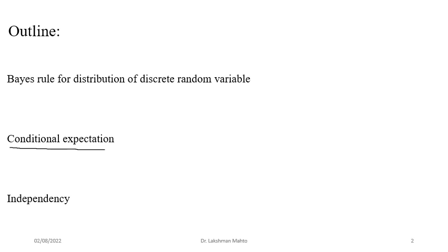We will also discuss independency — if two random variables happen to be independent, what kind of simplicity we observe in this framework. Independency simplifies the calculation of all concepts of probability distribution we have discussed. Dependency is more relevant to real-world problems, so in the process of understanding independency, we must understand dependency as well. If independency is not working, we can talk about conditional independency. These concepts from elementary probability will appear here from the discrete random variable perspective and later for continuous random variables as well.